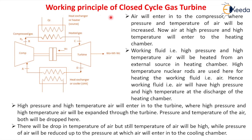Now let's see the working principle of the closed cycle gas turbine. Air enters the compressor where pressure and temperature of air will increase. Air at high pressure and high temperature will then enter into the heating chamber. In the heating chamber — which can also be called the combustion chamber — heat is provided to the air using a heat exchanger. The working fluid, high pressure and high temperature air, is heated from an external source.